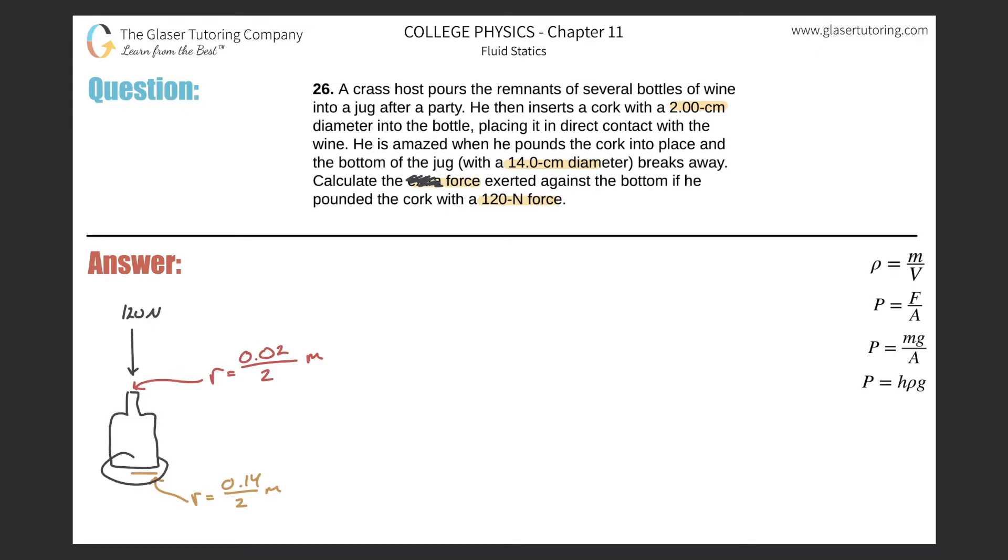This is resting on a surface, so if this top experiences a pressure, that pressure is distributed in all directions and then is distributed against the whole bottom here onto the table. The pressure here will equal the pressure here. We can create a formula: the pressure at the cork will equal the pressure at the bottom of the jug.